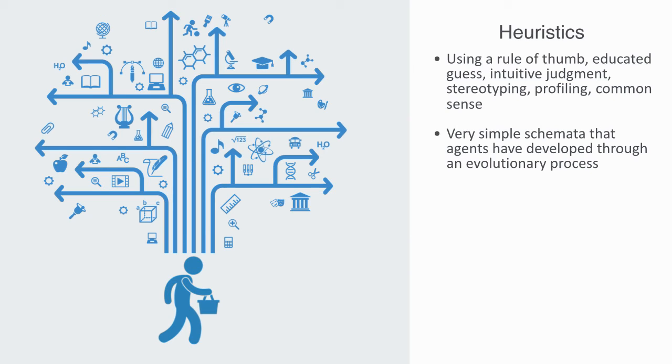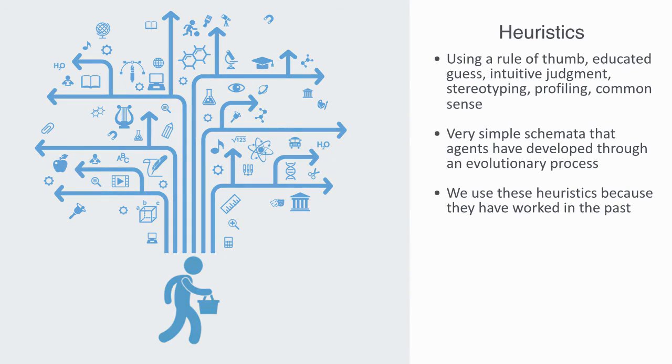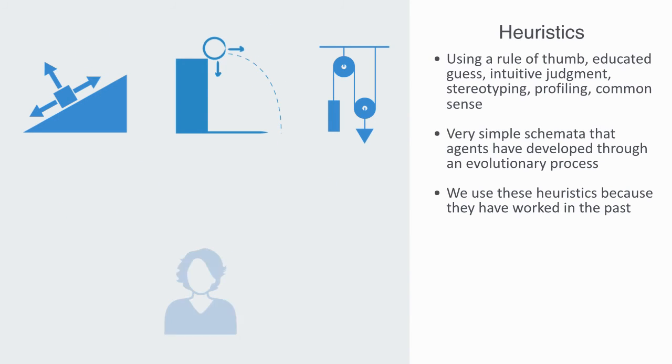We use these heuristics, because they have worked in the past. Things, considered common sense, are with us, because they have stood the test of time. We don't need a PhD, in theoretical physics, to tell us, that things fall downwards towards the ground. It is common sense, because we have seen it, billions of times. And this forms the foundation, to our assumption, that it will happen the next time.